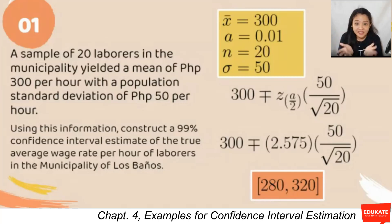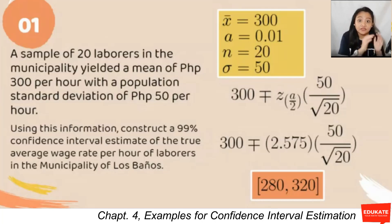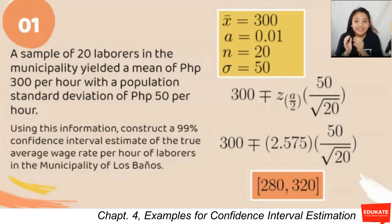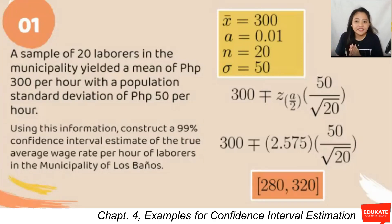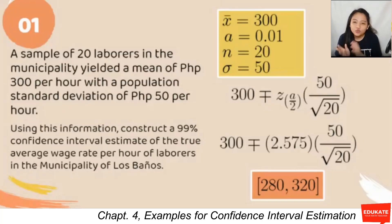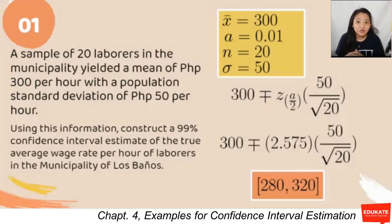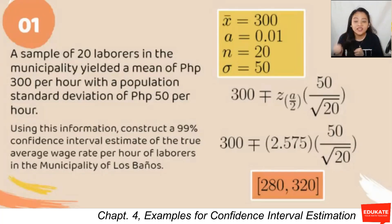Computing the lower and upper extremes: 300 − 2.575 × SE and 300 + 2.575 × SE gives us the interval (280, 320). Thus, we are 99% confident that the true average wage rate per hour of laborers in the municipality of Los Baños is between 280 and 320 pesos — not including those endpoints.